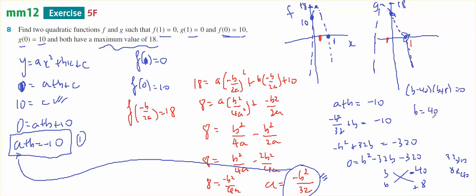So b will equal 40 or negative 8. When b equals 40, a plus 40 equals negative 10, a equals negative 50. And when b equals negative 8, a plus negative 8 equals negative 10, a equals negative 2.